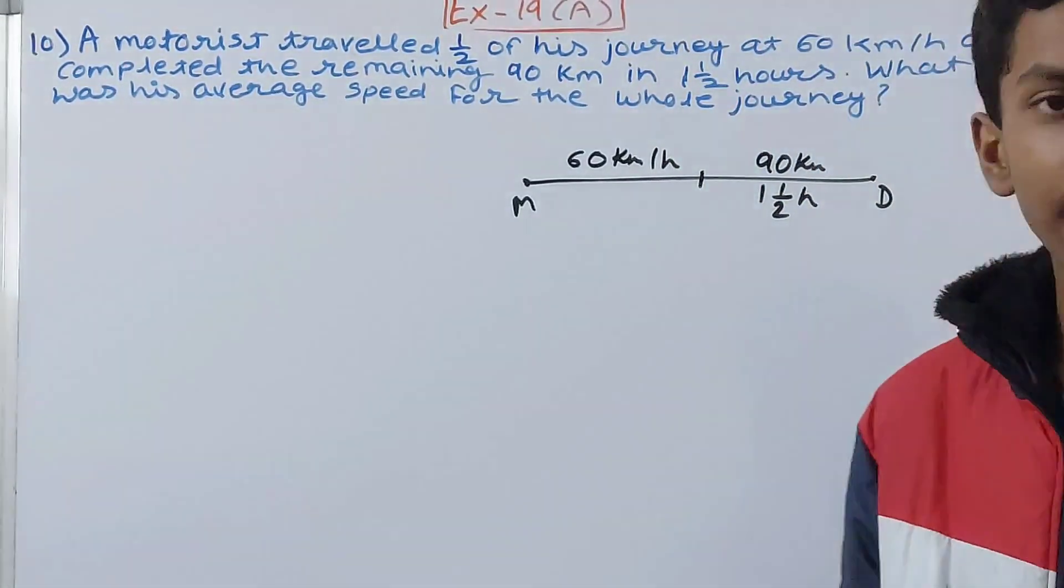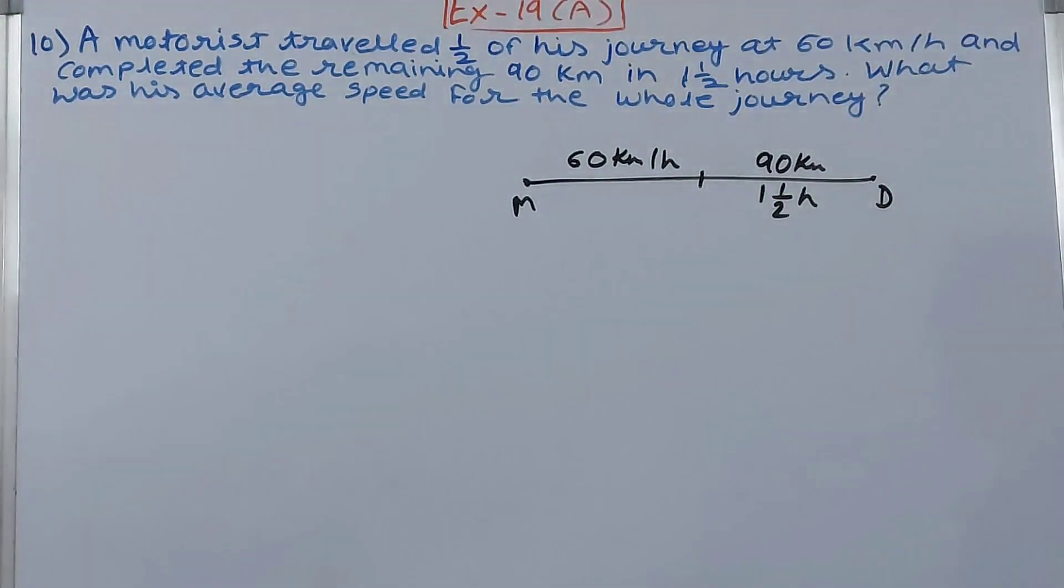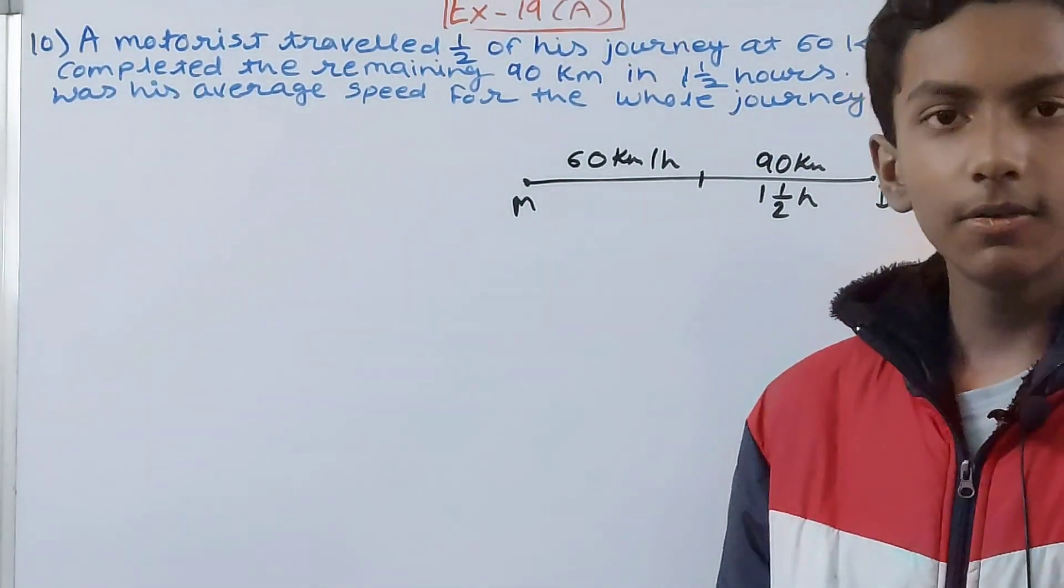60 plus 90 divided by 2, that is 150 by 2, so the average speed becomes 75. Same will be done here, but first we need to know the speed in both halves, then only we will find the average speed.